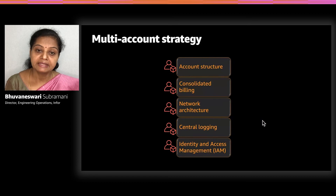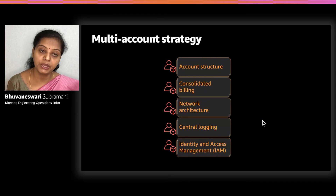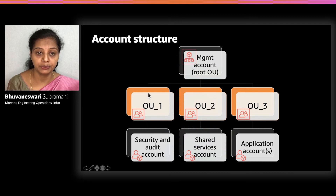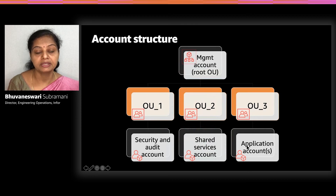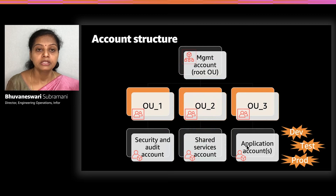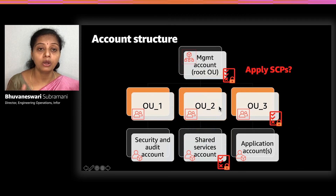We'll look at a sample multi-account strategy covering consolidated billing, network architecture, central logging, and how IAM works. Here is the sample architecture with a management account — the root organizational unit — and three different organizational units: a security and auditing account, a shared services account, and an application account. The application account can be further subdivided into different accounts per environment, such as dev, test, and prod. For these accounts, you can create Service Control Policies and apply them at the management level, the individual organizational unit level, or even the account level.